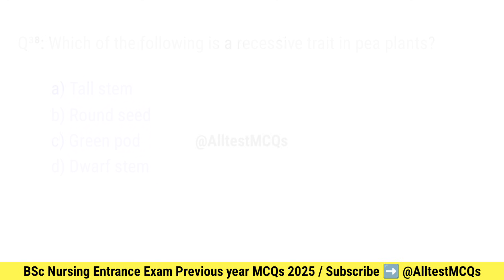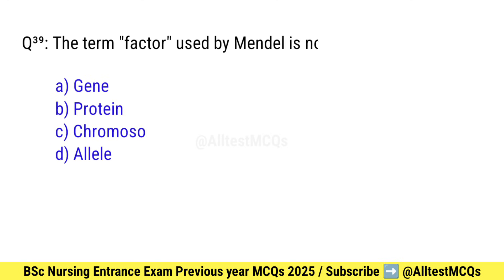Question number 39. The term 'factor' used by Mendel is now known as what? Right option is A: Gene.